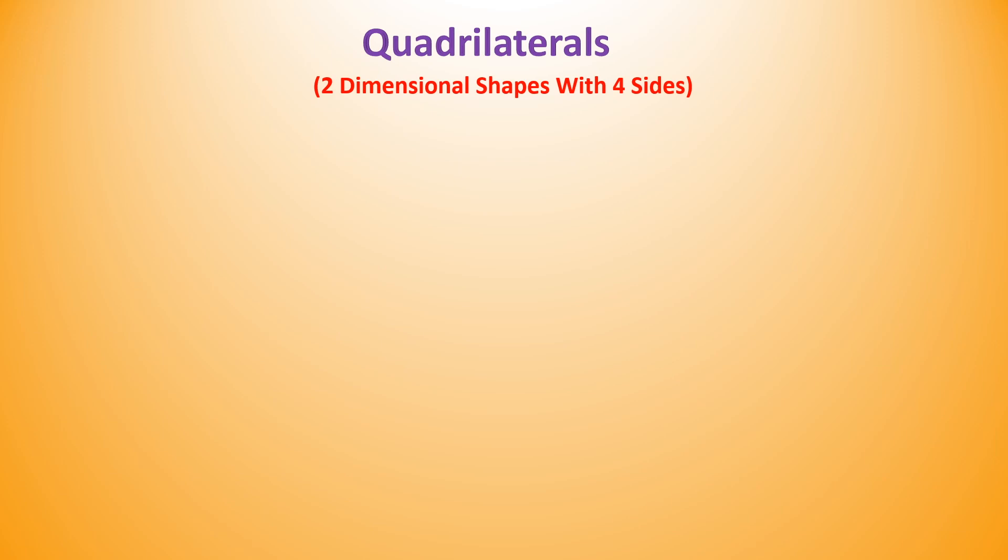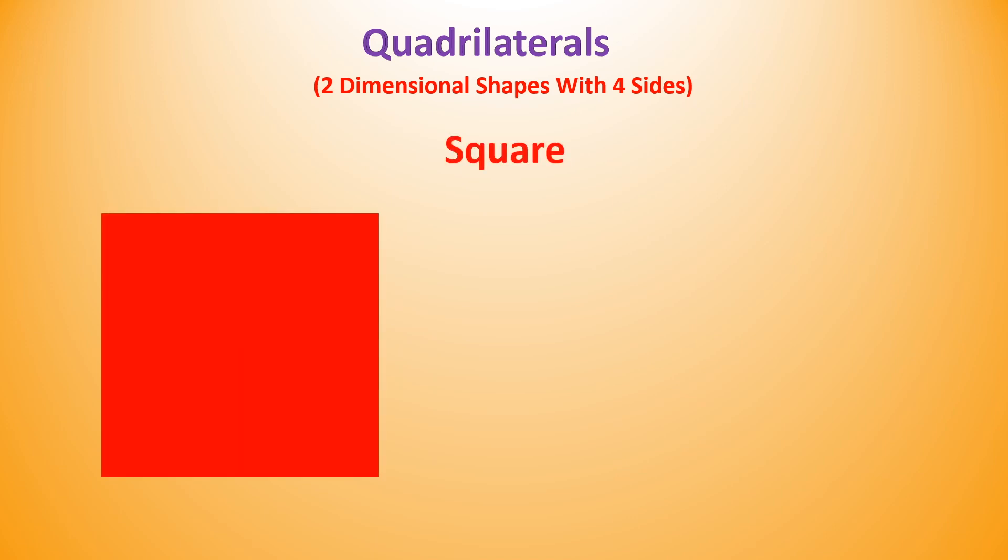Quadrilaterals. 2D shapes with four sides are called as quadrilaterals. Square is a quadrilateral which has four equal sides, four equal angles and four vertices.